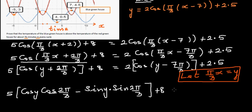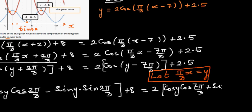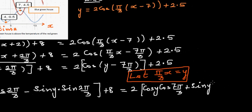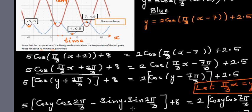For the right-hand side, the compound angle formula is for a minus b. So this becomes 2[cos y · cos(7π/3) + sin y · sin(7π/3)] + 2.5. I'll pause the video here — I want you to simplify this, and when I come back I will go over the other steps.